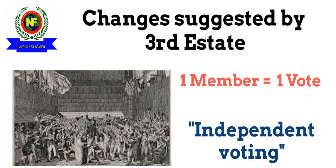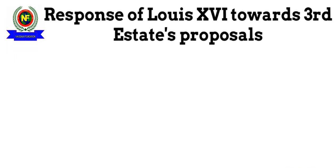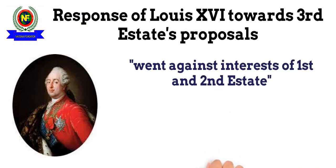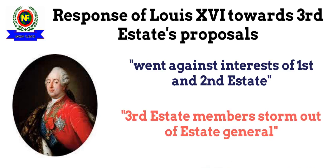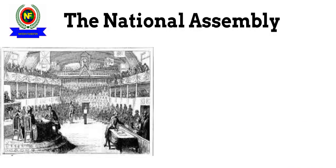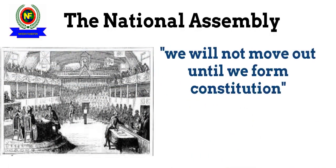Via the new system, the first estate had 300 votes, the second estate had 300 votes, and the third estate had 600 votes according to their number of representatives. However, the new voting system suggested by the third estate was not acceptable to the king, as it went against the interests of the first and second estates, whose support was crucial for him. So the third estate members walked out, gathered in an indoor tennis hall, and proclaimed that until they formed a constitution, they would not leave the tennis court.